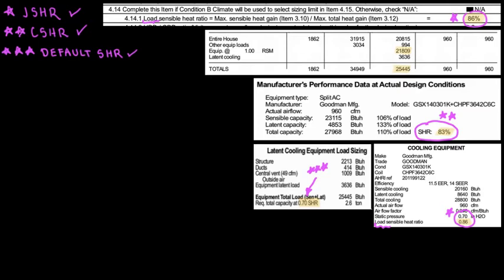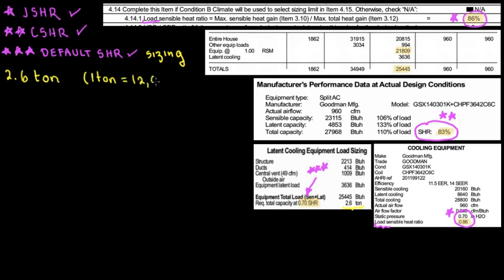Let's understand the default sensible heat ratio with a simple calculation. The main reason for this default sensible heat ratio is for sizing purposes. We see 2.6 ton here. When we're talking about tonnage, we remember that 1 ton equals 12,000 BTUs per hour — that's the nominal tonnage. So why is it 2.6 ton? Because we're using the default sensible heat ratio to size this unit based on the load calculation.